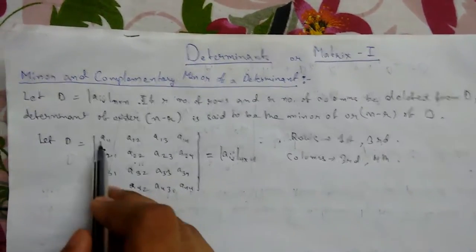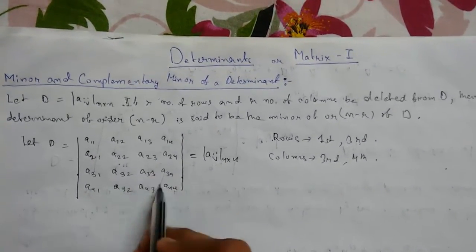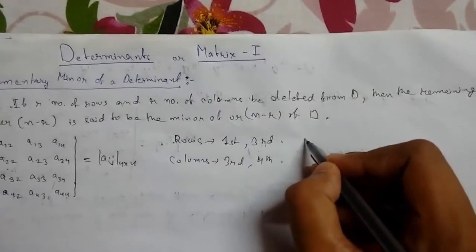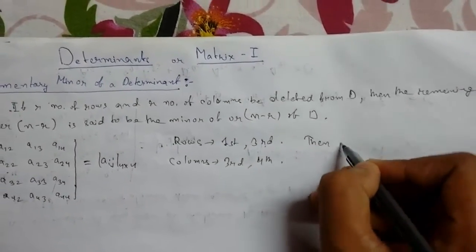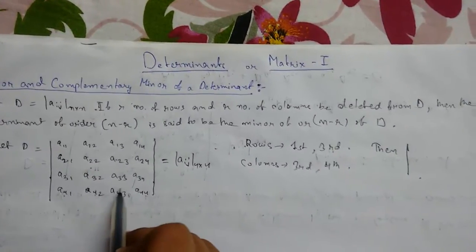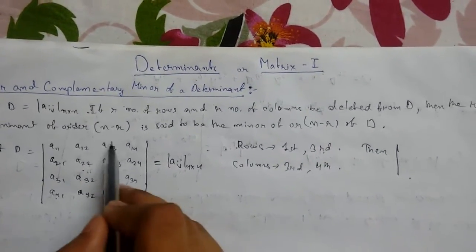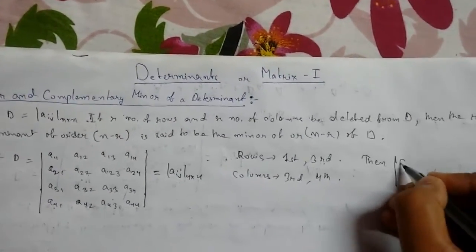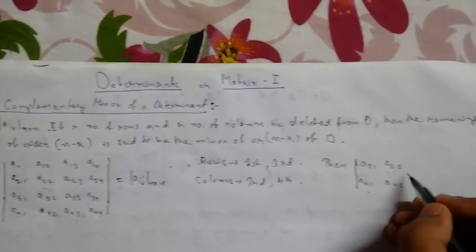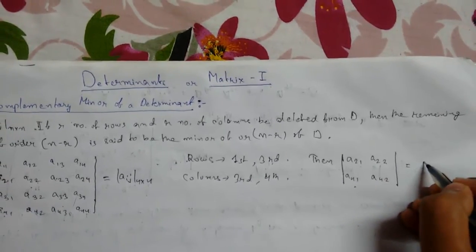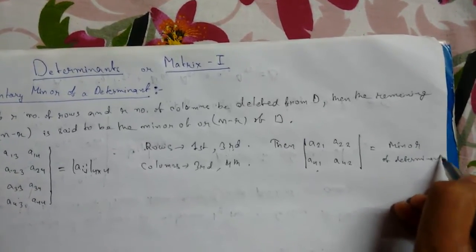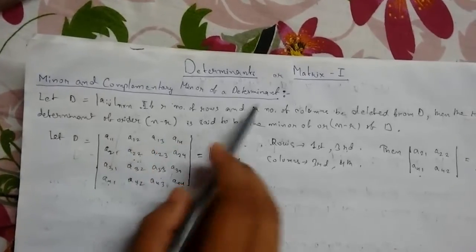So if we delete the first and third rows and the third and fourth columns, these four elements will be left. The resulting determinant will be: a21, a22 in the first row and a41, a42 in the second row. This is known as the minor of the determinant.